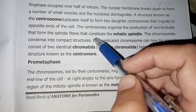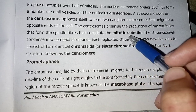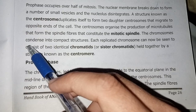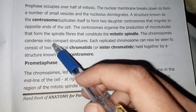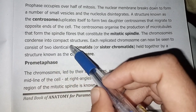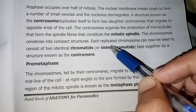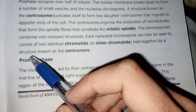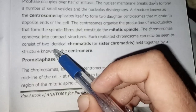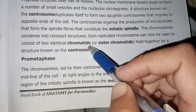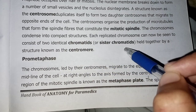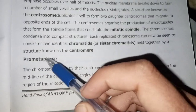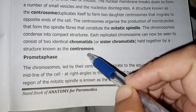The spindle fibers constitute the mitotic spindle. The chromosomes condense into compact structures. Each replicated chromosome can now be seen to consist of two identical chromatids — sister chromatids — held together by a structure known as the centromere.